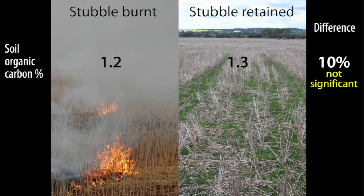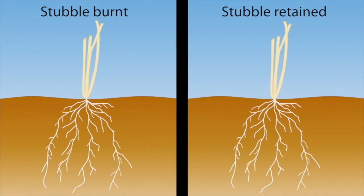But why might we think that after 18 years of burning all the straw, we haven't built up any more carbon? Let's think about that. Below ground, our root systems are the same. Whether we're burning the stubble on the surface or retaining the stubble, our carbon input from our root systems are the same. In a wheat crop, about half of our carbon is below ground in the roots, so we're not changing that.